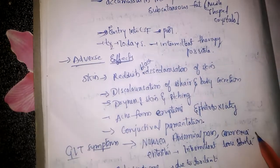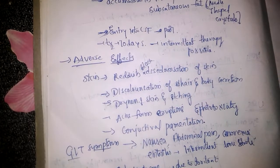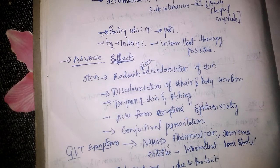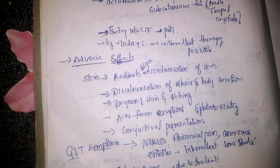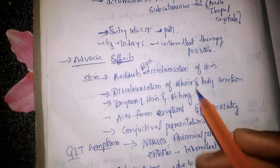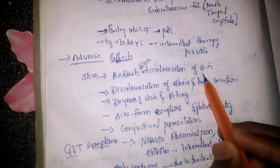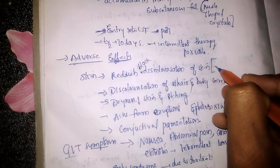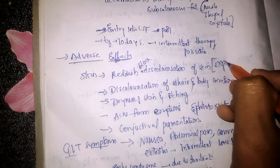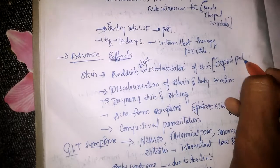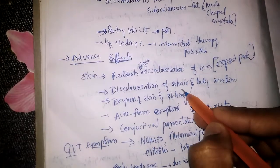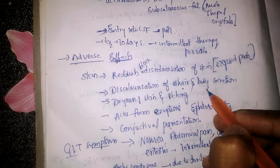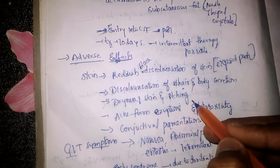Coming to adverse effects, these can be divided into skin and GIT symptoms. In skin, there is usually reddish-black discoloration, especially in exposed parts. There is also discoloration of hair and body secretions.